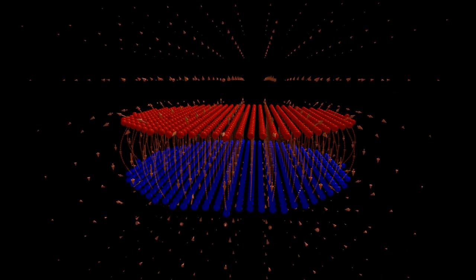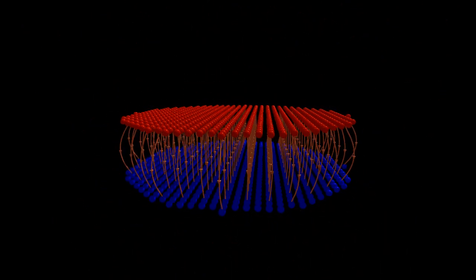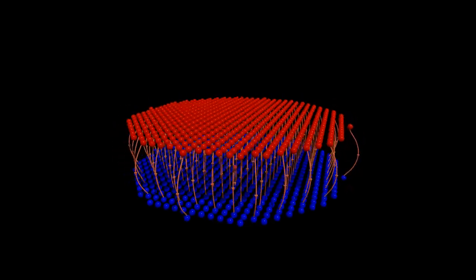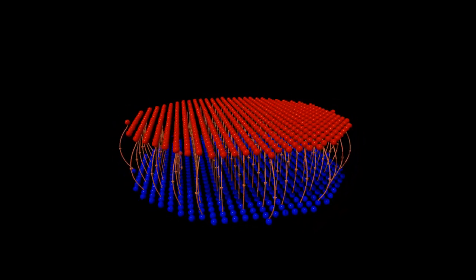The uniform field is represented by parallel, equally spaced electric field lines. The field lines shown here bend outwards a bit at the edges of the plates, an effect known as fringing.